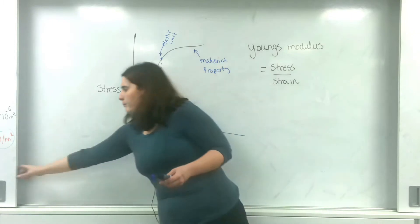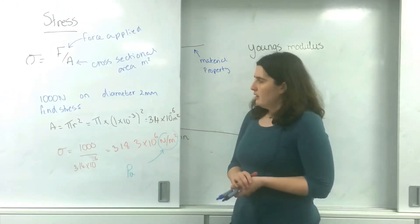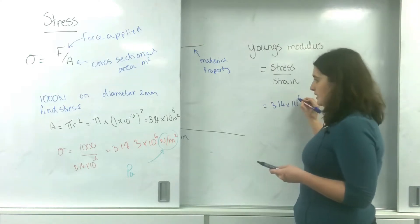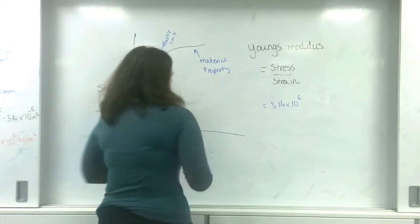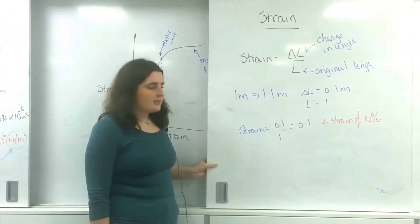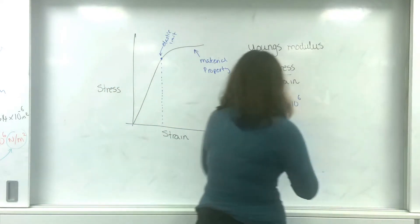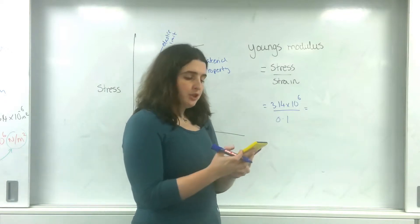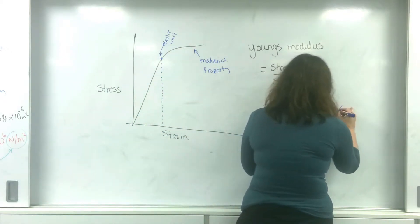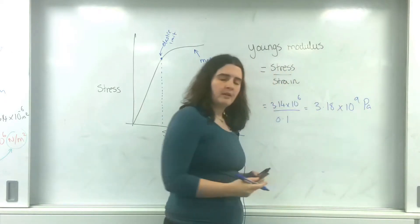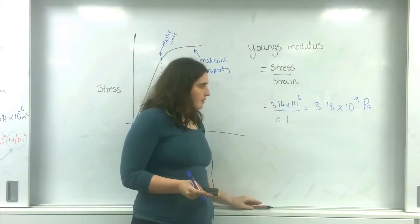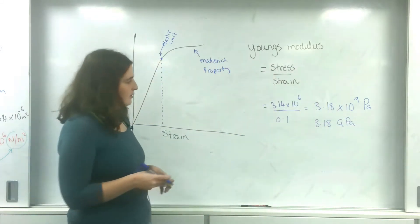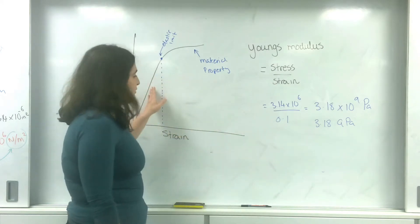So before, in my previous videos, I worked out the stress of my 1,000 Newtons on a 2mm wire, and I worked out my stress was 3.14 times 10 to the 6th Newtons per metre squared, or Pascals. And I worked out my strain of this spring was 0.1. Which means my Young's Modulus for this material is 3.18 times 10 to the 9 Pascals — this has a unit, strain doesn't — or gigapascals. And this would be represented by the gradient of the graph.